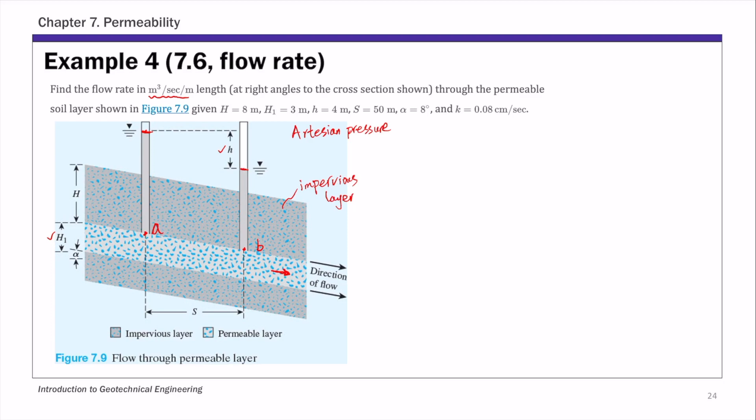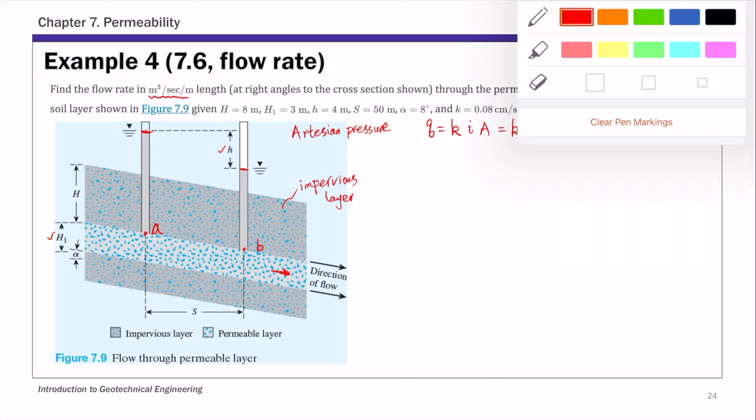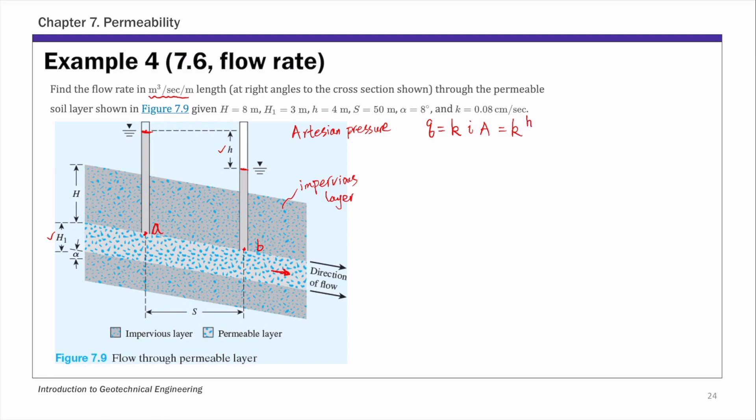And then for this artesian pressure, we are given the pressure difference between point A and point B. And to calculate the seepage, we're going to need Darcy's law. We're going to use Q equals to KIA. And K is permeability, I is hydraulic gradient. So using this notation, this is basically I is small h over distance L times A. So to calculate the flow rate, we basically need to find what A is and what L is.